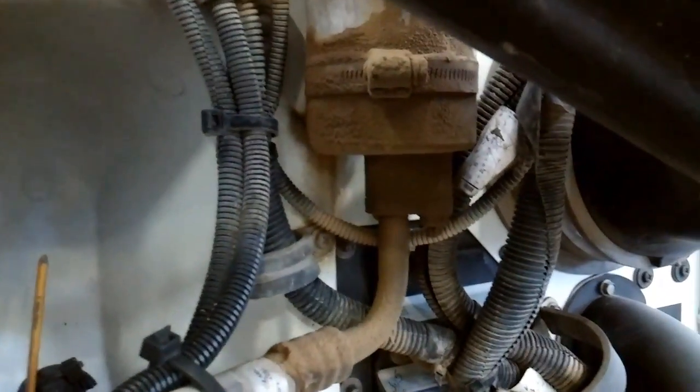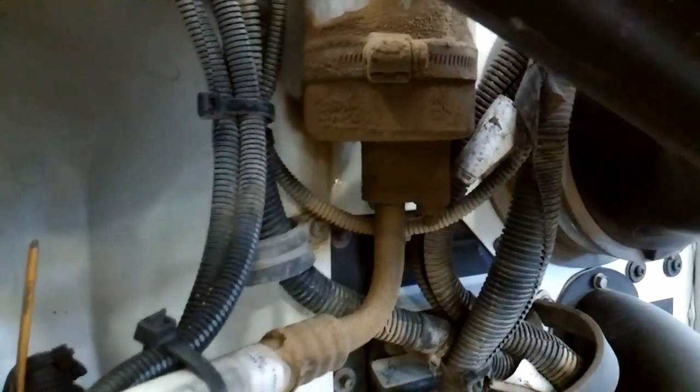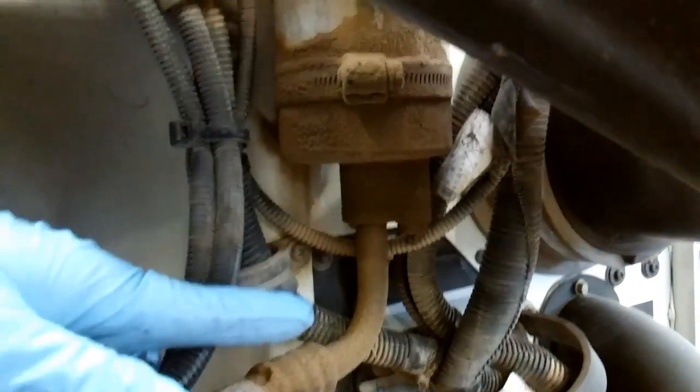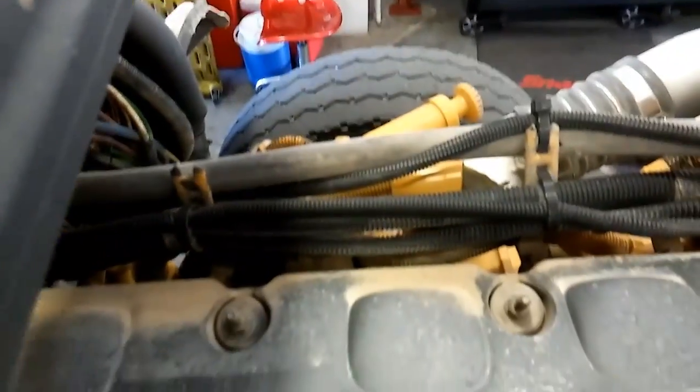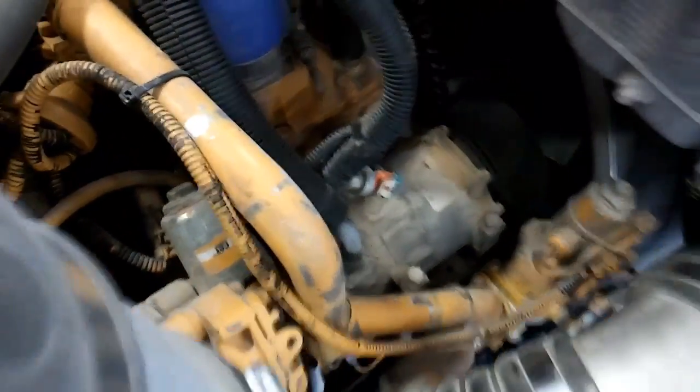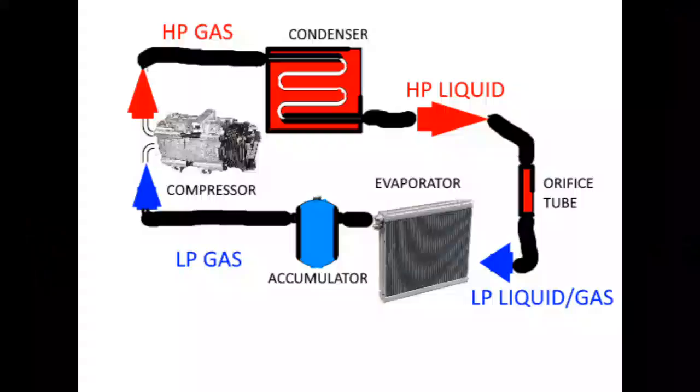We're going to follow the accumulator, which is still covered in dirt. It has a line coming out of it as well. That line, if we follow it along the valve cover, is going to come back over and back into your AC compressor.